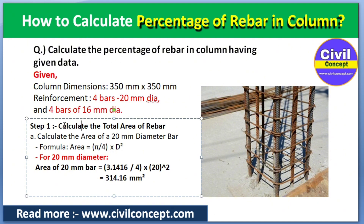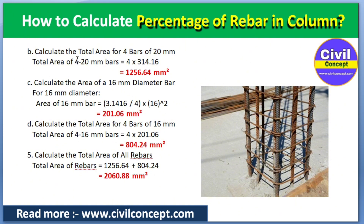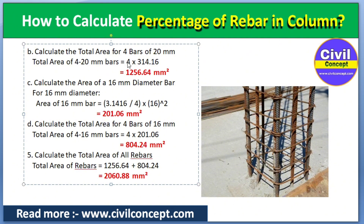First, we will calculate the total area of rebar. The formula is πd²/4. For the four 20mm diameter bars, the area of a single 20mm bar equals π/4 × 20² = 314.16mm². Multiplying by 4 gives us 1256.64mm², which is the area of four bars of 20mm diameter.